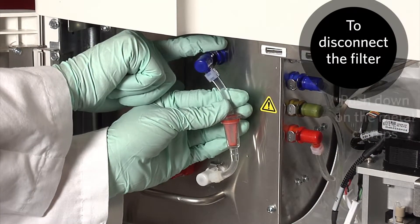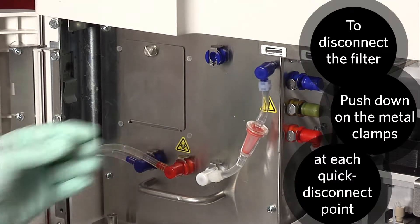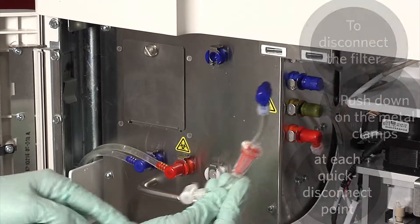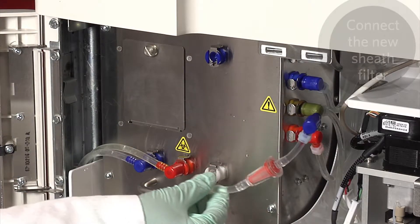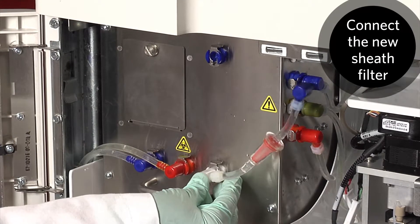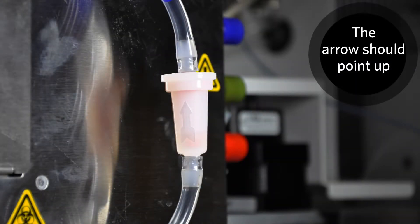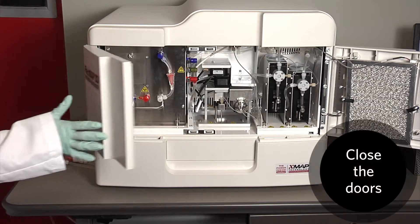Disconnect the filter by pushing down on the metal clamps at each quick disconnect point. Connect the new sheath filter, matching up the color-coded fittings. The arrow on the sheath filter should be pointing up. Close the left door.